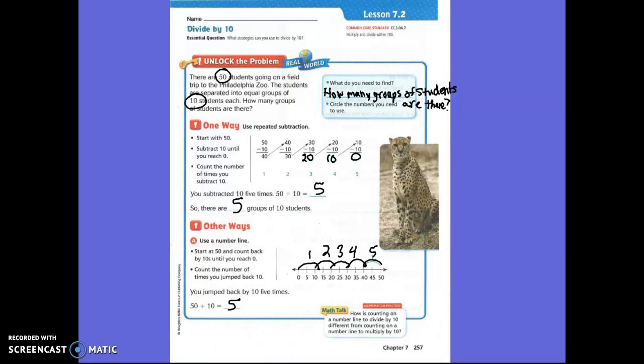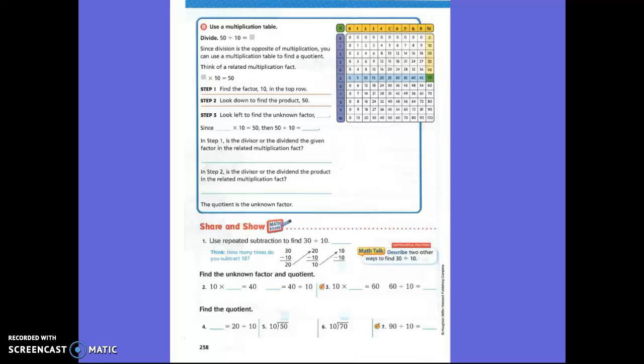Next page. Fifty divided by ten. We're still doing the same problem, except for this time you're using a multiplication table. What you basically are doing is you're finding the missing factor. We know this by now, guys. Fifty divided by ten equals five, right? And then we could switch them around with our related facts.